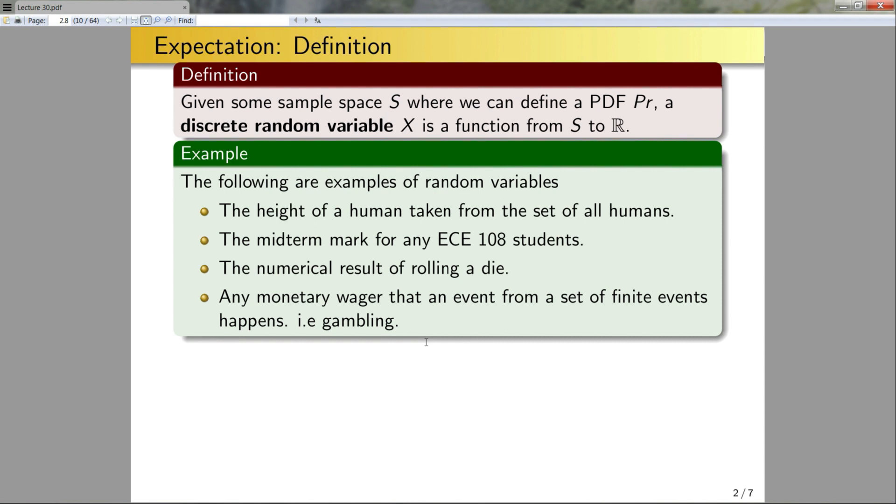Next, any monetary wager that an event from a set of finite events happens, i.e. gambling. So whenever you're putting a monetary value associated for particular events within a discrete sample space, that would be an example of discrete random variables.